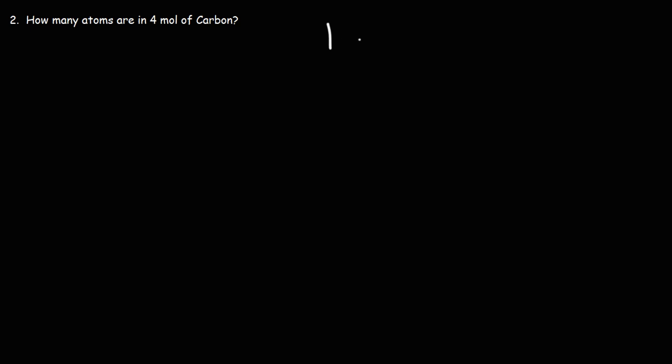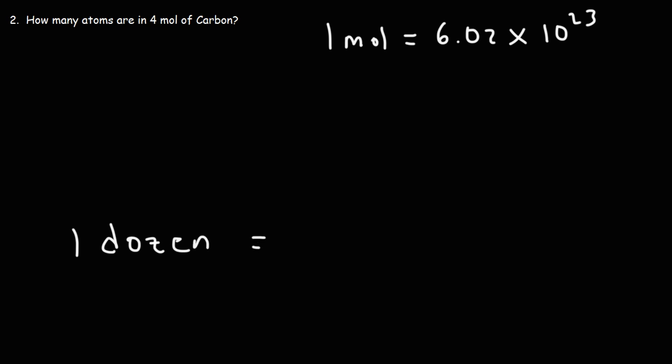Here's the conversion factor you need: 1 mole is equal to 6.02 times 10 to the 23. Think about what that means — a dozen is 12, it's just a number. If you have a dozen eggs, you have 12 eggs. A mole represents a specific number. If you have a mole of eggs, you have 6 times 10 to the 23 eggs. So a mole of atoms is 6 times 10 to the 23 atoms. It's just a quantity — a way to represent a very large number of something.